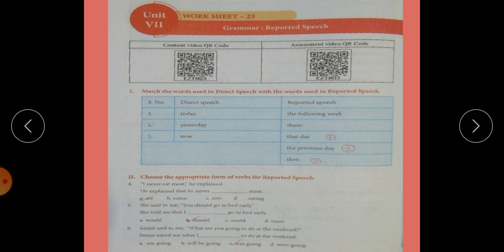Then fifth one. She said to me you should go to bed early. She told me. What type of sentence? It starts with you, it is a subject. So it is also a statement. She told me that I should go to bed early. Should is correct.